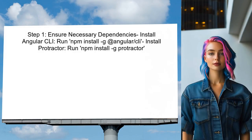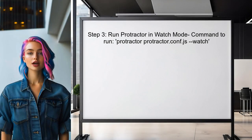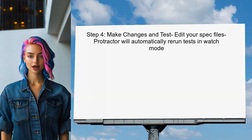To run Angular end-to-end tests in watch mode, first ensure you have the necessary dependencies installed, including the Angular CLI and Protractor. Next, configure Protractor to run in watch mode by creating a configuration file or modifying an existing one. Then run the Protractor command with the watch flag — this allows the tests to run continuously without rebuilding the entire project. Finally, you can make changes to your spec files and Protractor will automatically rerun the tests without needing to rebuild the project each time.